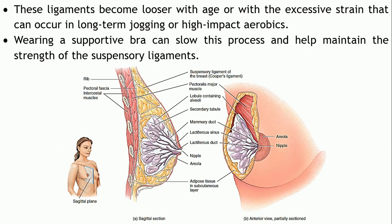With age, these ligaments may become looser. Also, excessive strain which may occur during jogging or high-impact aerobics may lead to these ligaments becoming loose. This can be prevented by wearing a supportive bra, which helps maintain the strength of the suspensory ligaments supporting the breast.